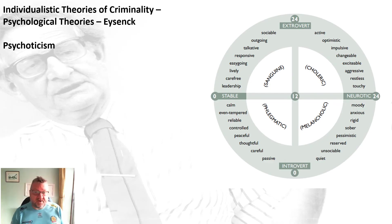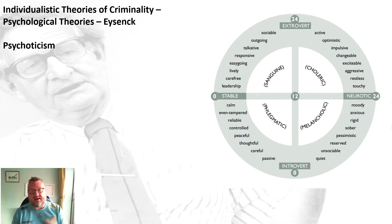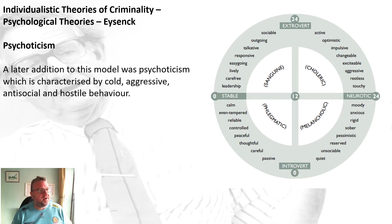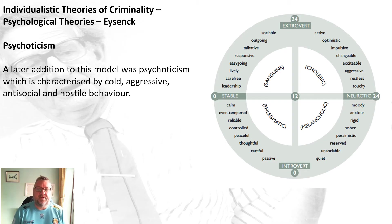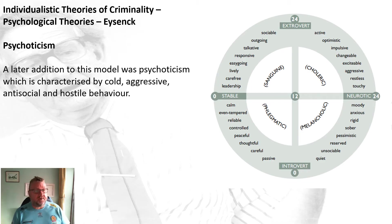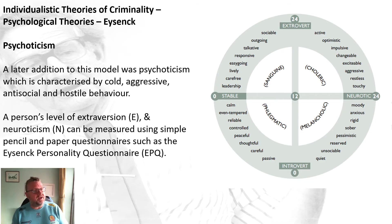For Eysenck, criminality is linked to that inability of the parasympathetic system to come down. His final dimension was psychoticism, which was a later addition to the model, characterised by cold, aggressive, antisocial and hostile behaviour.